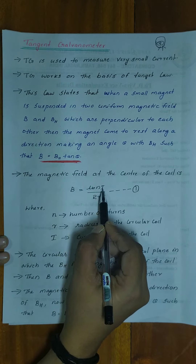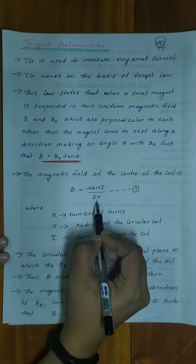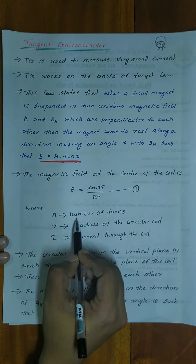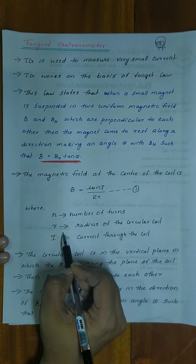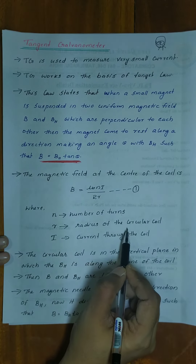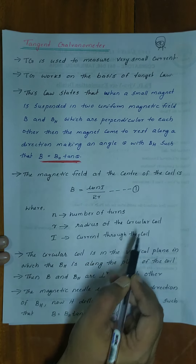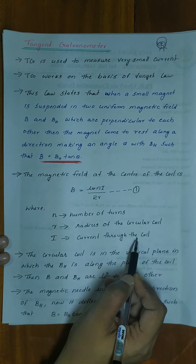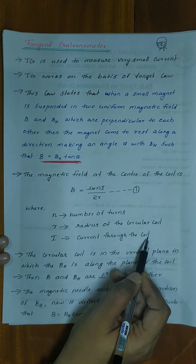The magnetic field at the center of the coil is measured by the equation B is equal to mu₀NI by 2R, where N is the number of turns, R is the radius of the circular coil, and I is the current through the coil.